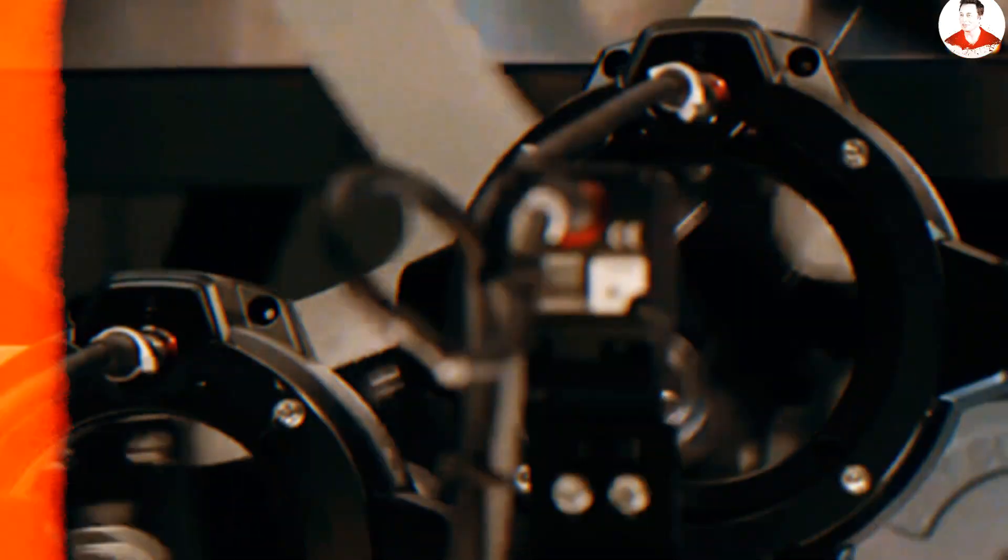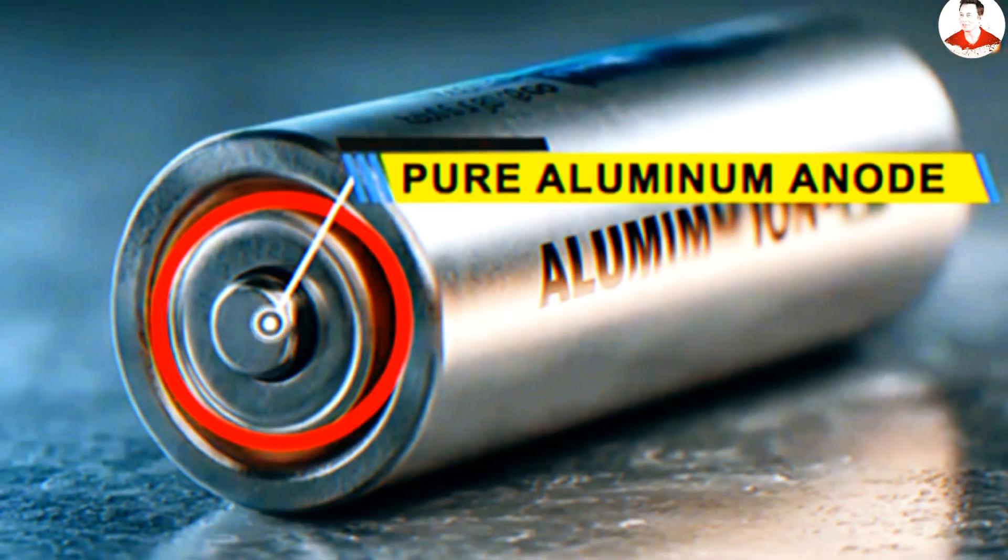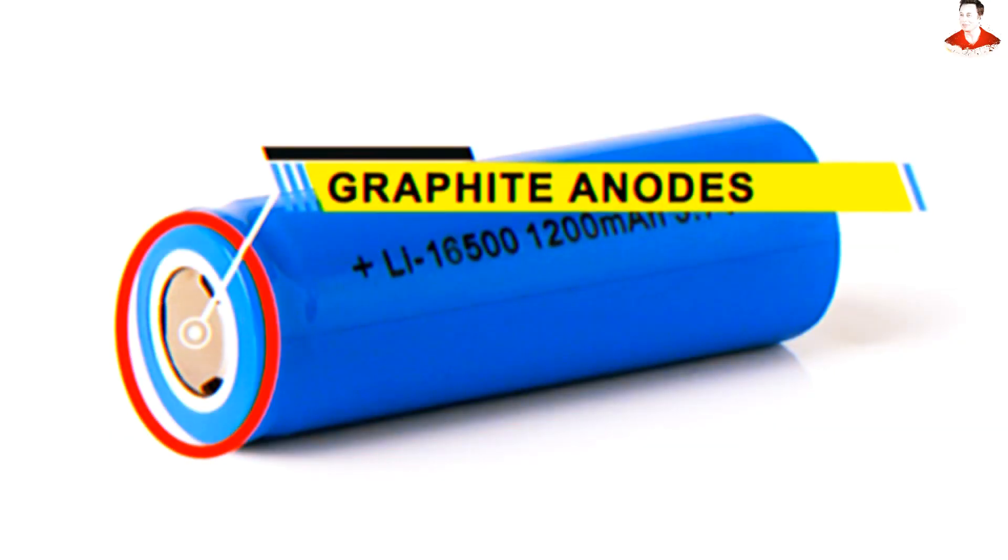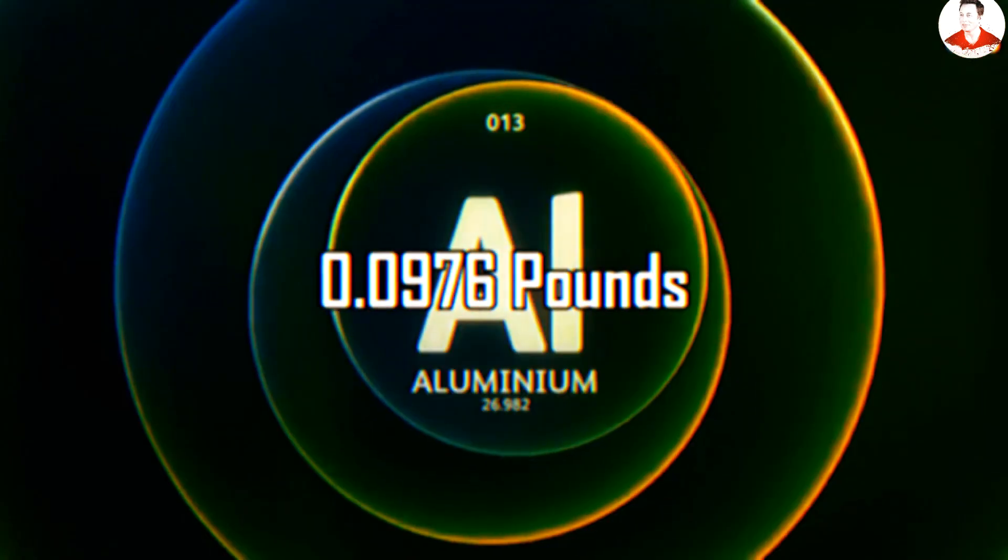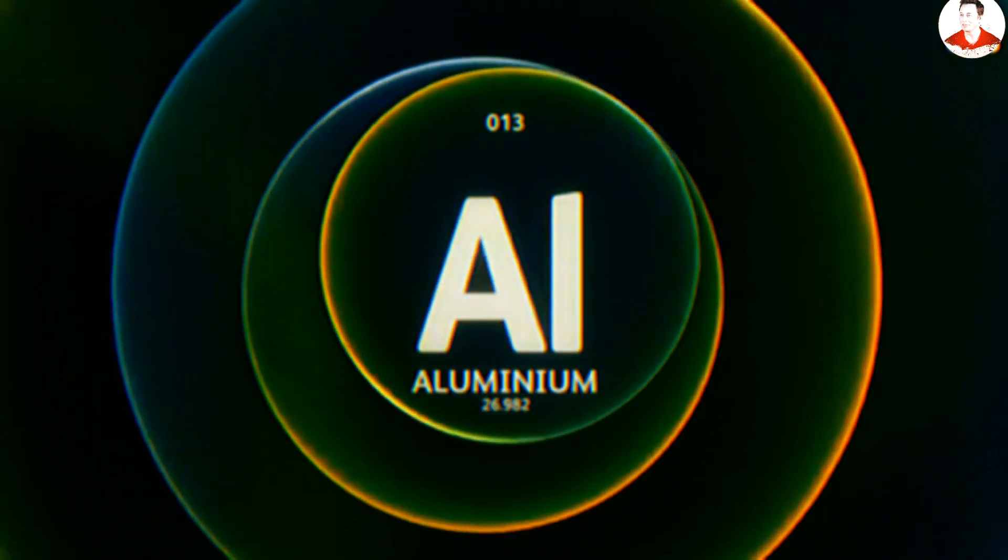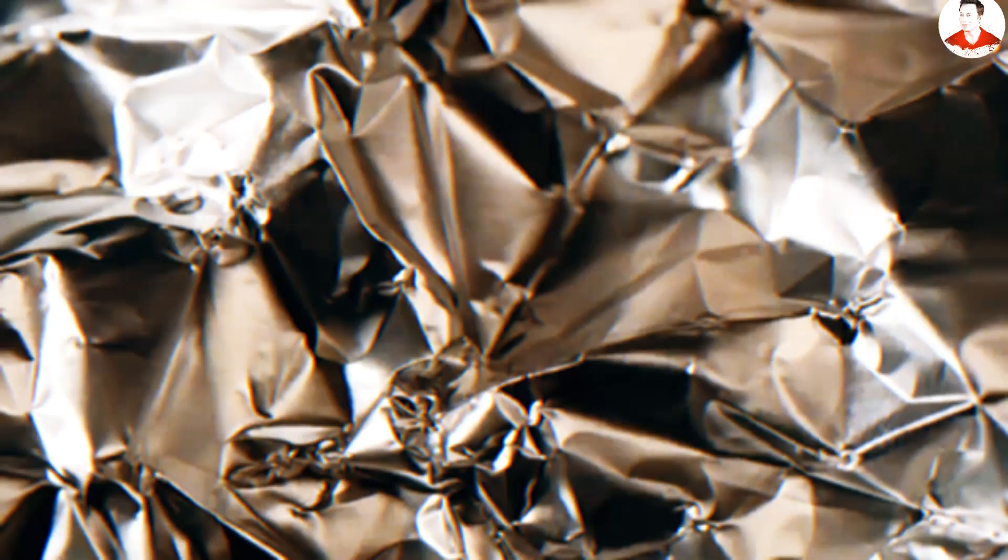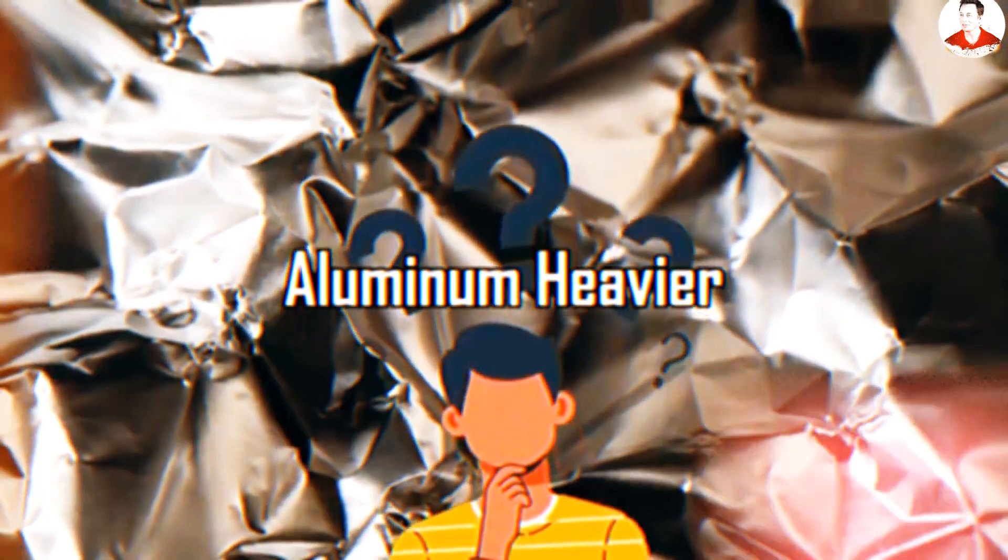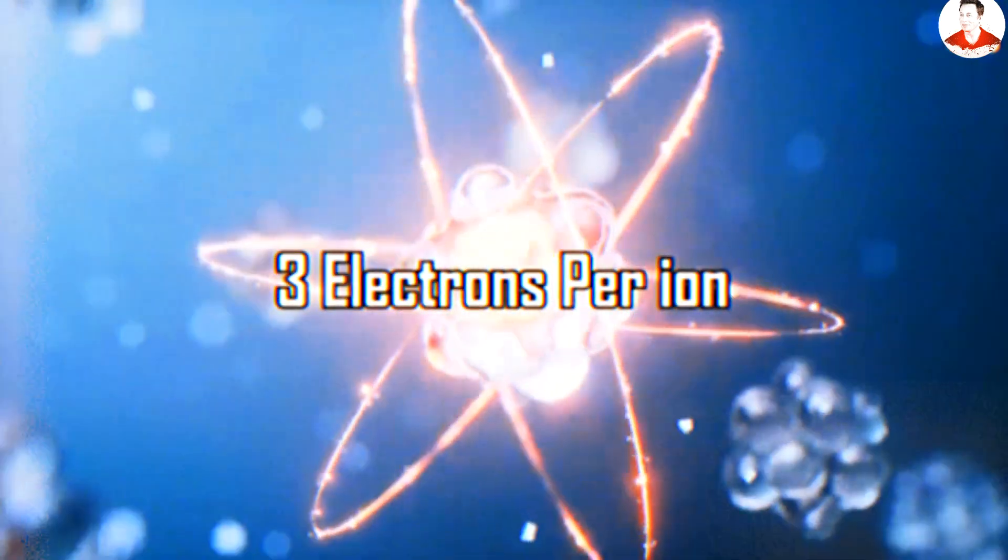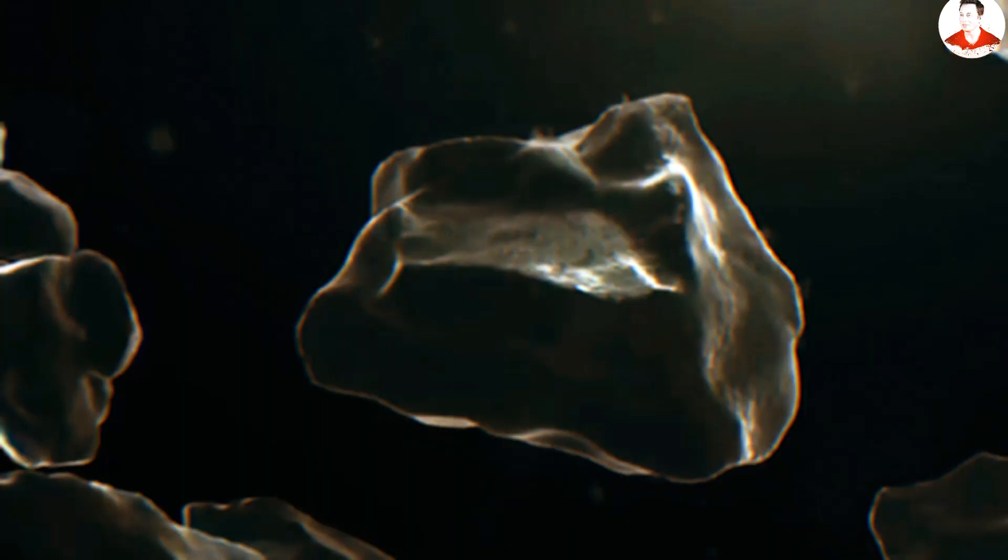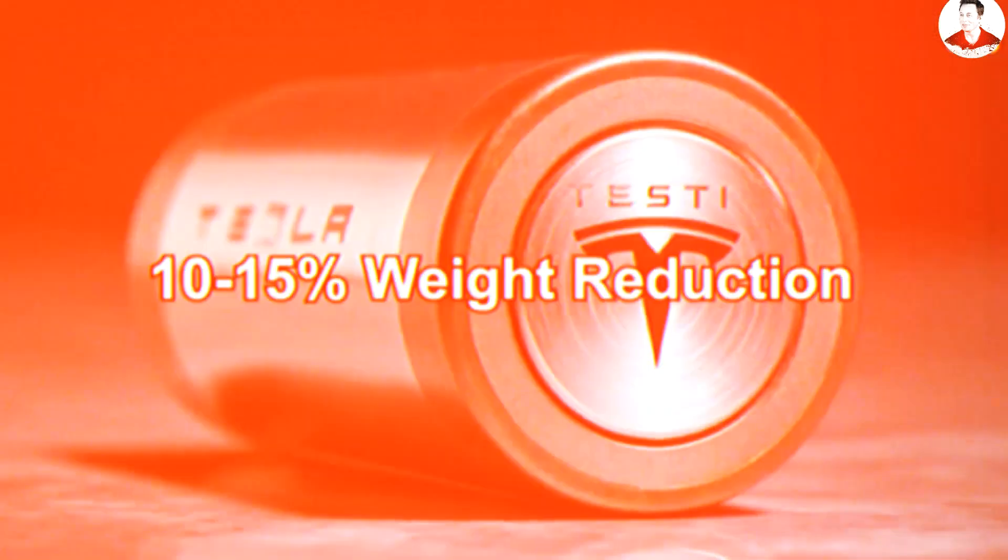At the heart of this revolution lies the pure aluminum anode, which weighs significantly less than the graphite anodes used in lithium-ion batteries. With aluminum's density of 0.0976 pounds per cubic inch compared to graphite's approximately 0.0795 pounds per cubic inch, you might think aluminum would be heavier, but here's the engineering brilliance. Aluminum can transfer 3 electrons per ion compared to lithium's single electron transfer. This means you need far less material to achieve the same energy storage capacity, resulting in a net weight reduction of 10 to 15 percent in the anode alone.